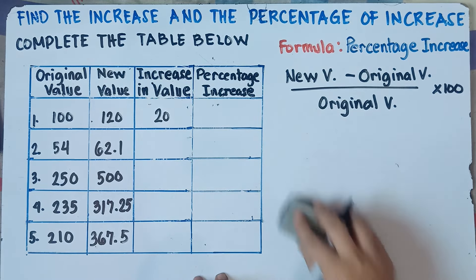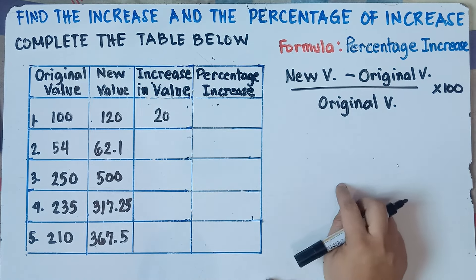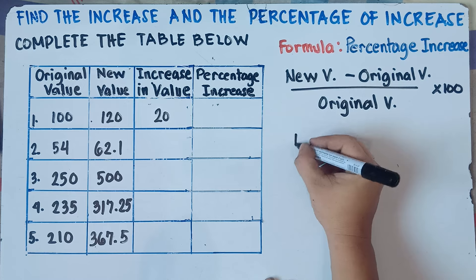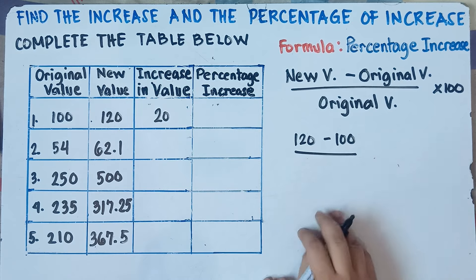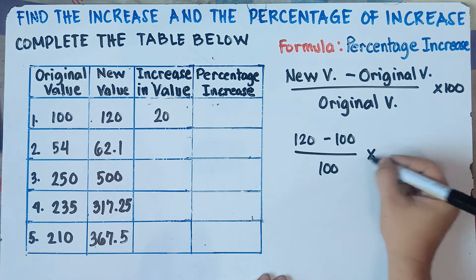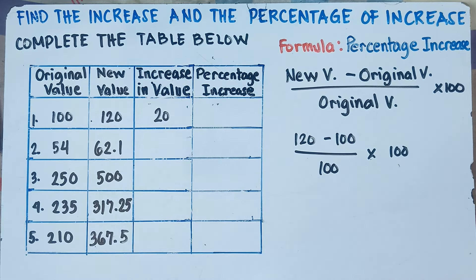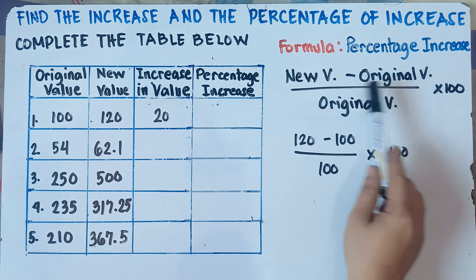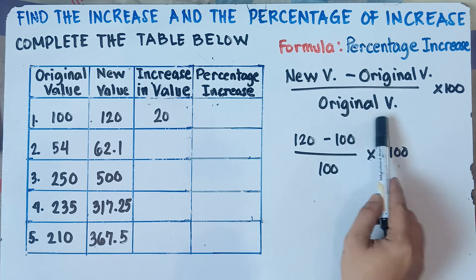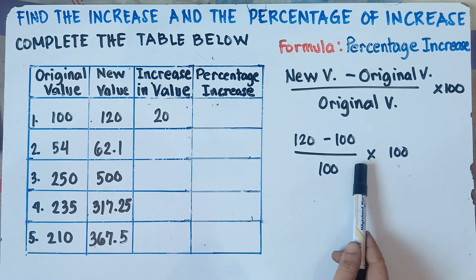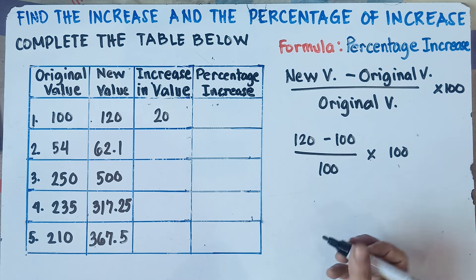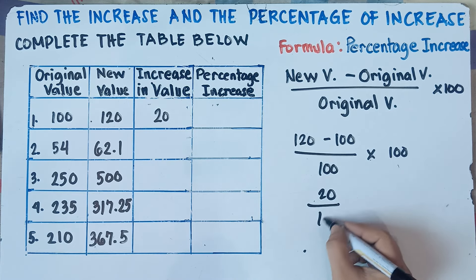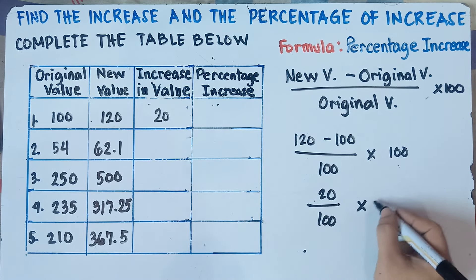To get the percentage increase, here is the formula: new value minus original value, divided by original value, then multiplied by 100. So that's 120 minus 100, divided by 100, then multiplied by 100.